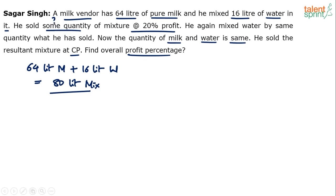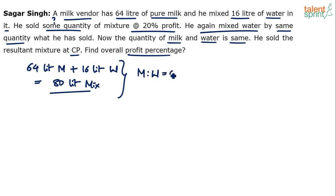After selling that quantity, the same quantity of water was mixed again. And now the quantity of milk and water is same. The milk to water ratio initially is 4:1 — 64 liters of milk and 16 liters of water. Let us assume that x liters has been sold. After selling x liters of mixture, x liters of water is added back. After adding water, the quantity of milk and water has become equal. So in the second case, we know that milk equals water.